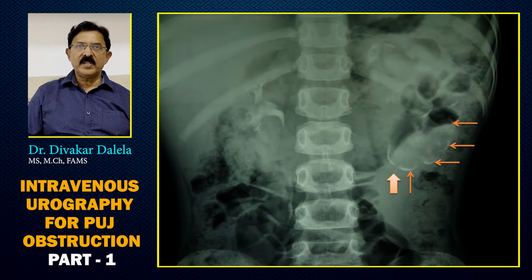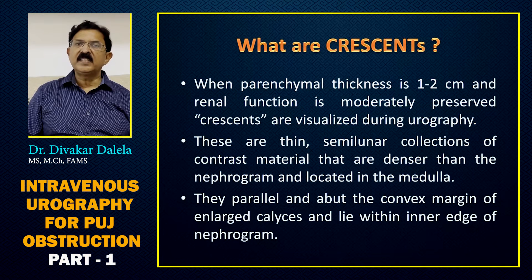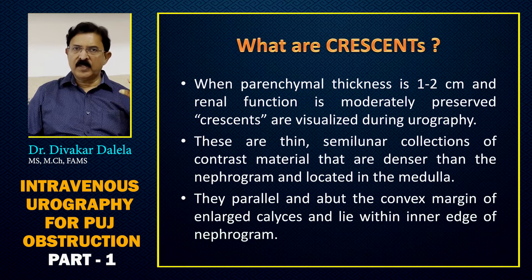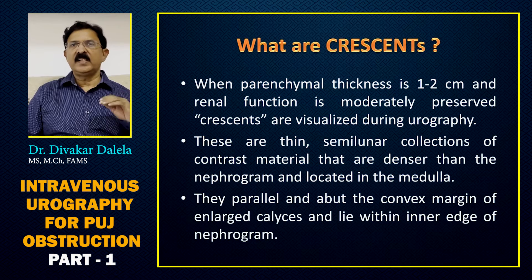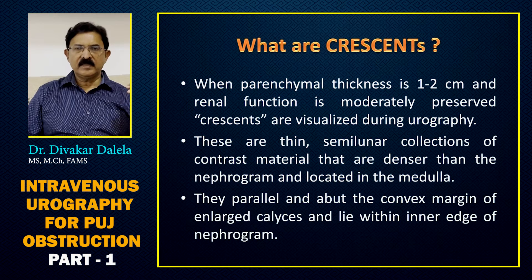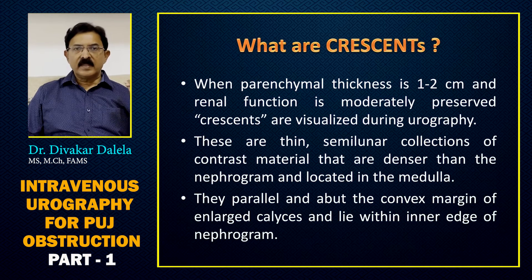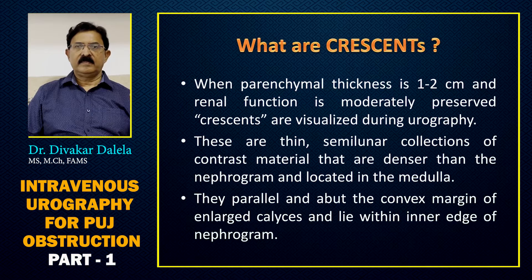This image shows crescents more clearly with orange arrows. What are these crescents? When parenchymal thickness is reduced but not too much reduced, and renal function is moderately preserved, you will often see these crescents in urography. These crescents are thin semi-lunar collections of contrast that appear denser than the rest of the parenchyma. They run parallel to the convex margin of the enlarged calyces and are located at the inner edge of the nephrogram.